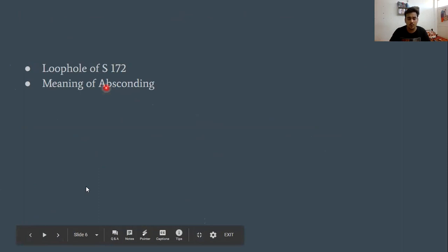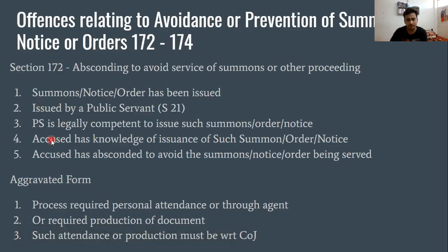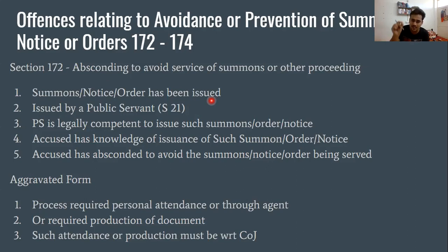Ab loophole kya hai section 172 mein? Loophole uske ingredient mein hai. First ingredient kehta hai: summon, notice, or order has been issued — process issue ho gayi hai. Ab ek situation socho jab summon issue hi nahin hua hai, aur phir bhi accused gayab hai. Court ke andar accused ko kisi se pata chala — from somewhere he comes to know that process has been issued against him — par wo issue nahin hua abhi tak, hone wala hai. Aur wo usi time abscond kar jata hai — section 172 yahan fail hota hai. Yeh ek loophole hai.